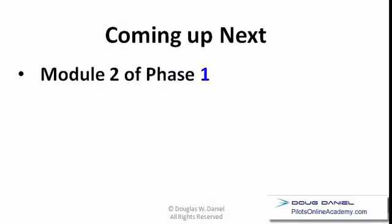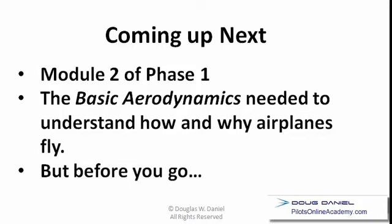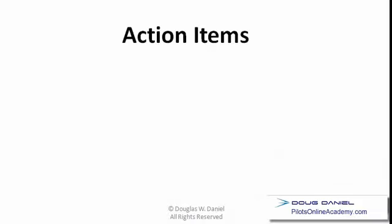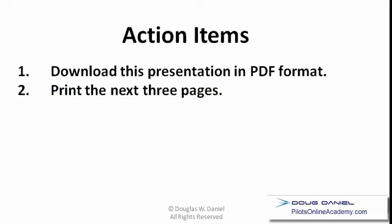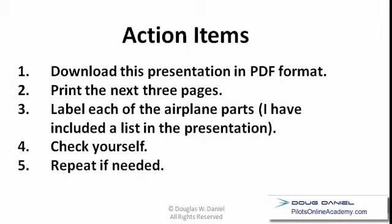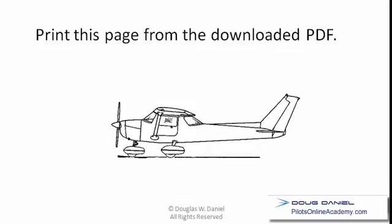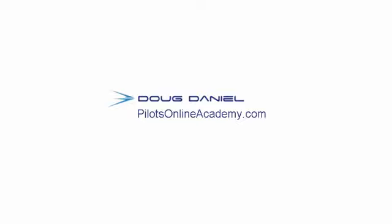Coming up next is Module 2 of Phase 1: the basic aerodynamics needed to understand how and why airplanes fly. Before you go, I have some action items for you. I recommend that you download this presentation — it's available in PDF format — keep it as a reference, and print the next three pages in the presentation to label each of the airplane parts. A list is included. Check yourself and repeat if you don't get them right. Thank you very much and I look forward to our next one.